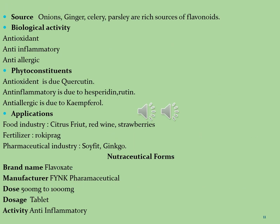The sources of flavonoids include onions, ginger, celery, and parsley, which are rich sources. Other sources include tea, citrus fruits, citrus fruit juices, berries, red wine, apples, and legumes. Flavonoids are used for anti-allergic, anti-inflammatory, antioxidant, antimicrobial, antibacterial, antifungal, antiviral, anticancer, and anti-diarrheal activities.